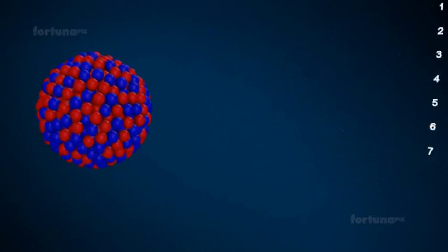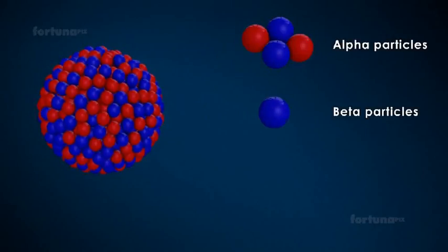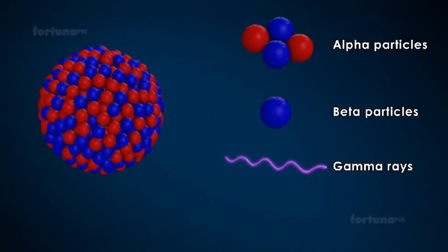An unstable nucleus will attempt stability by undergoing the process of radioactive decay. Most naturally occurring radioactive elements will emit either alpha particles or beta particles during this process. However, the emission of these particles is often accompanied by the emission of gamma rays. Elements such as radium will emit all three types of radiation.